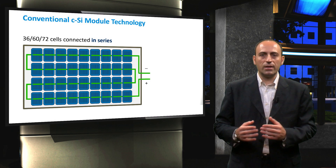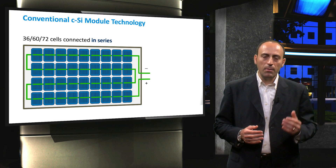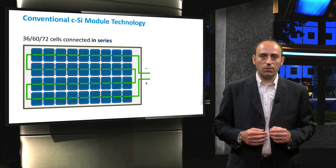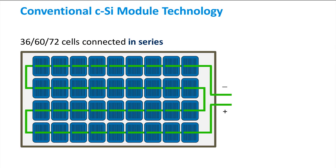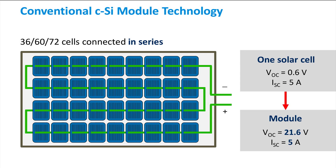So the voltage and current output of a module can be partially tuned through the solar cell interconnection. Coming back to the example of 36 cells series connected, once we know the IV characteristics of one single junction solar cell — for example, a short circuit current of 5A and an open circuit voltage of 0.6V — then we can derive the output open circuit voltage of the module, which would be 36 times higher compared to the single solar cell. The result is therefore 21.6V and a short circuit current of 5A, which is the same as one single solar cell.